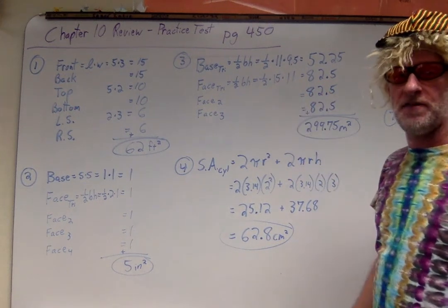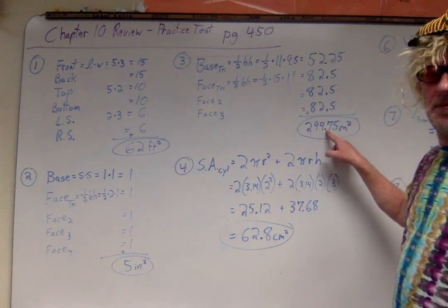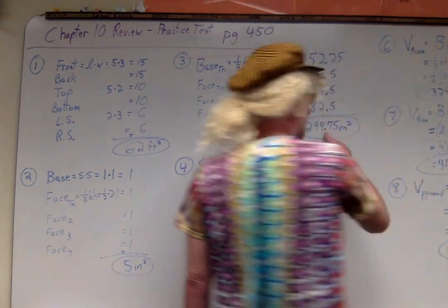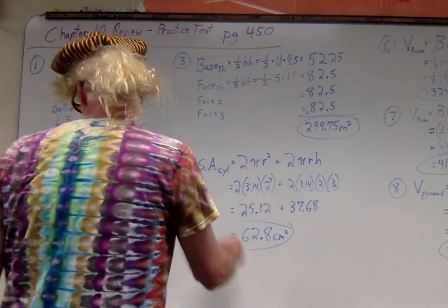I said each triangular face was 15 by 11, base and height were 15 and 11. Cut that in half and I got 82.5. Once again add them all up: 299.75 meters squared.